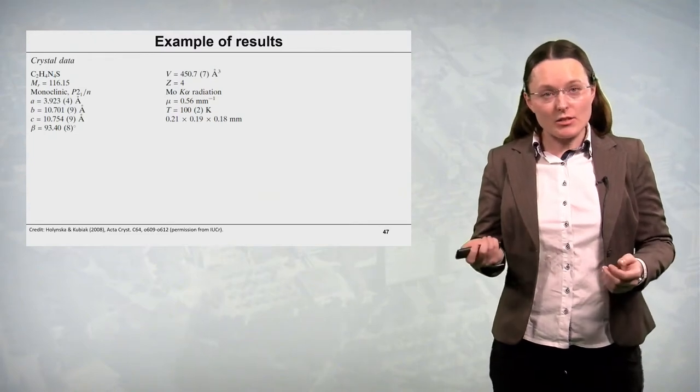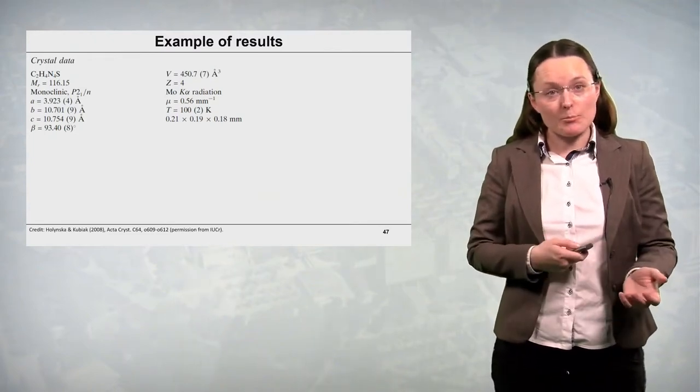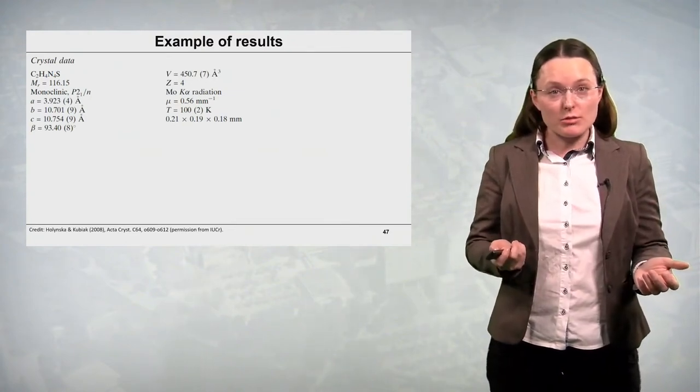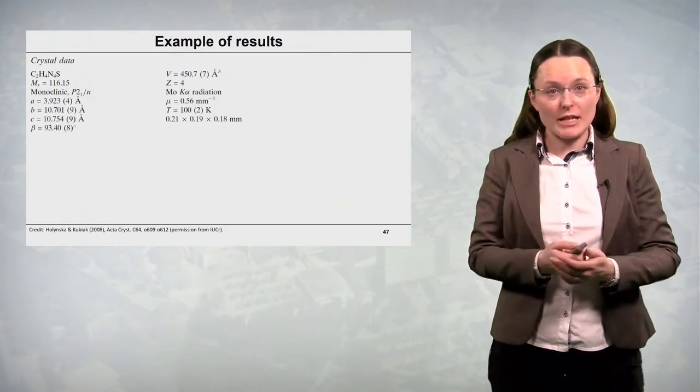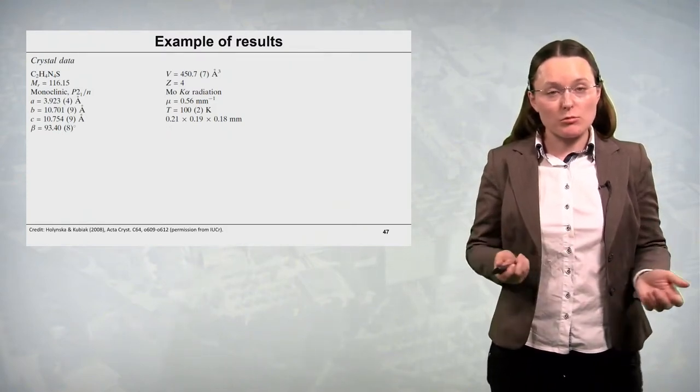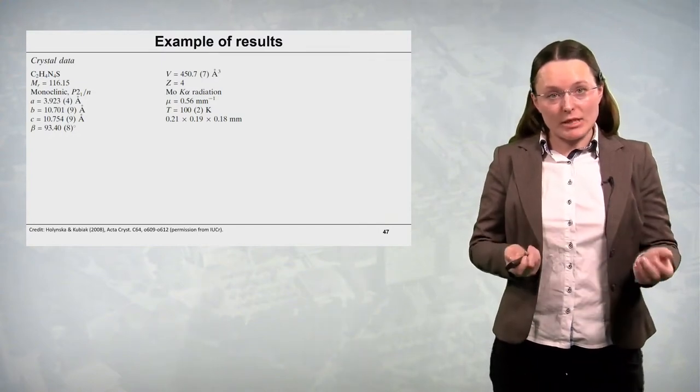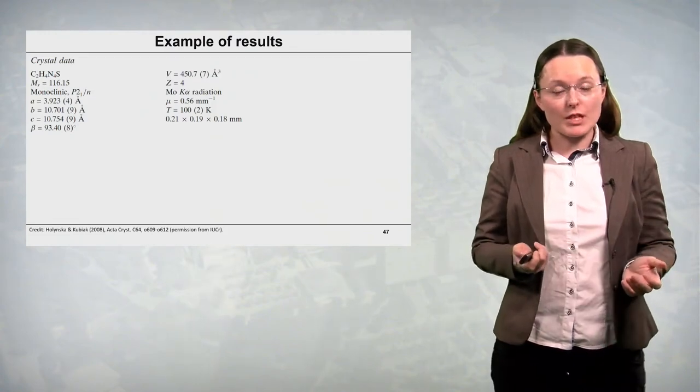Then in the next column we have the unit cell volume, the z number, the sort of x-rays which were used in this experiment. In this case it's molybdenum radiation. So the anode was made from molybdenum. Then we have an absorption coefficient, temperature of the measurement.